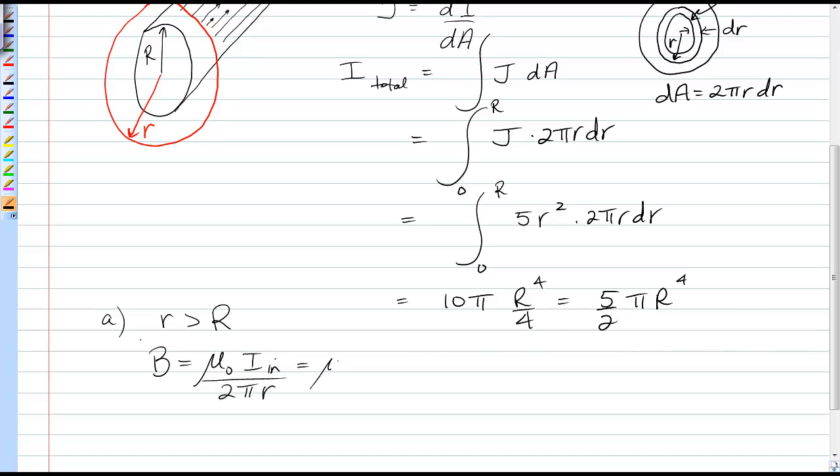In this case, i_in would be the total current, because it all threads through that Ampere circle. So then I would put 5/2 π capital R to the fourth over 2πr.